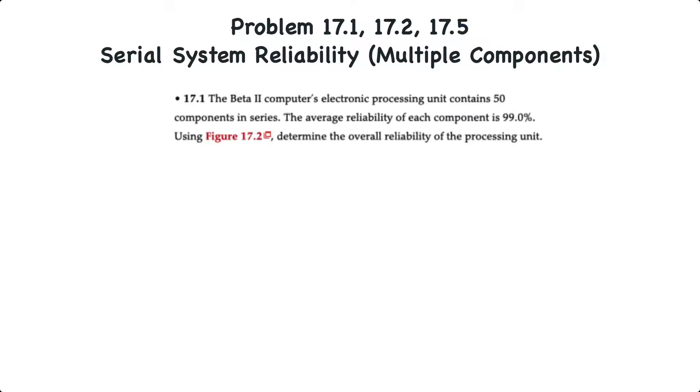We can look at problems 17.1, 2, and 5 all at the same time. With problem 17.1, here we have a computer's electronic processing unit that contains 50 components in series. The average reliability of each component is 99%. What we have to do is determine the overall reliability of the processing unit.